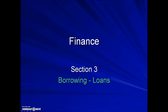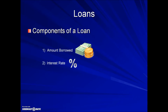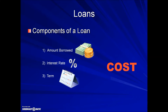Finance unit, section 3: borrowing money and loans. There are three components to a loan — the amount of money borrowed, the interest rate, and the term, which is the length of the loan — all of which have a direct bearing on the total cost of borrowing money.